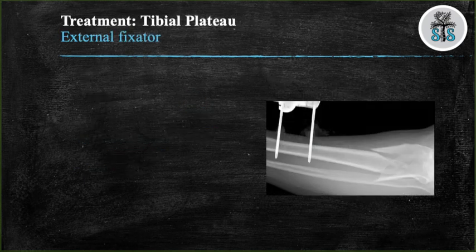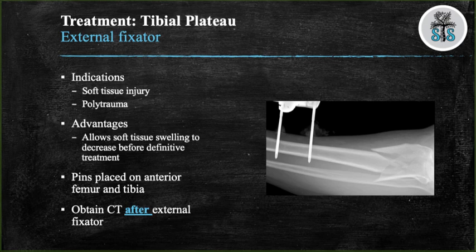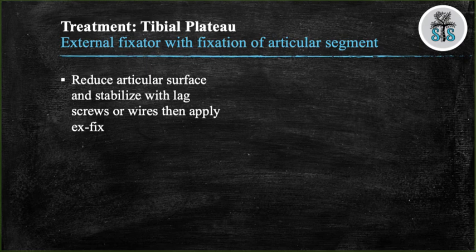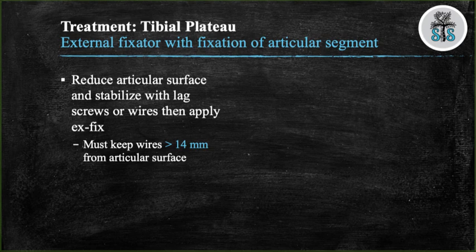External fixators can be used if soft tissue swelling is too severe for definitive internal fixation, allowing soft tissue to resolve prior to definitive fixation. They work by using continuous longitudinal force to bring fracture fragments closer together — a phenomenon known as ligamentotaxis, which requires intact soft tissues. Pins are placed on the anterior femur and tibia. For fractures requiring an external fixator prior to internal fixation, obtain the CT after the external fixator is applied. An external fixator can also be combined with fixation of the articular segment using a screw or wire placed at least 14 millimeters from the articular surface to avoid contaminating the knee joint.